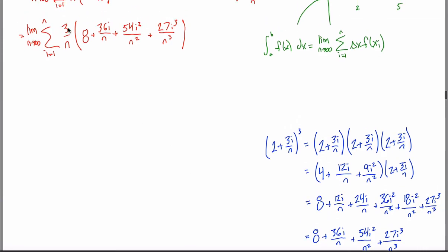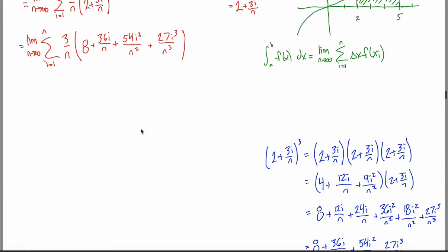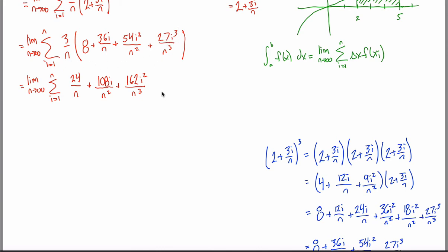I can come back and replace (2 + 3i/n)³ with this expression. Now all I have to do to get rid of the parentheses is take this 3/n and distribute it through. 3/n times 8 is 24/n. 3/n times 36i/n is 108i/n². 3/n times 54i²/n² — 3 times 54 is 162 — so 162i²/n³. And finally, 3/n times 27i³/n³ — 3 times 27 is 81 — so 81i³/n⁴. This is getting really ugly, but don't lose faith.